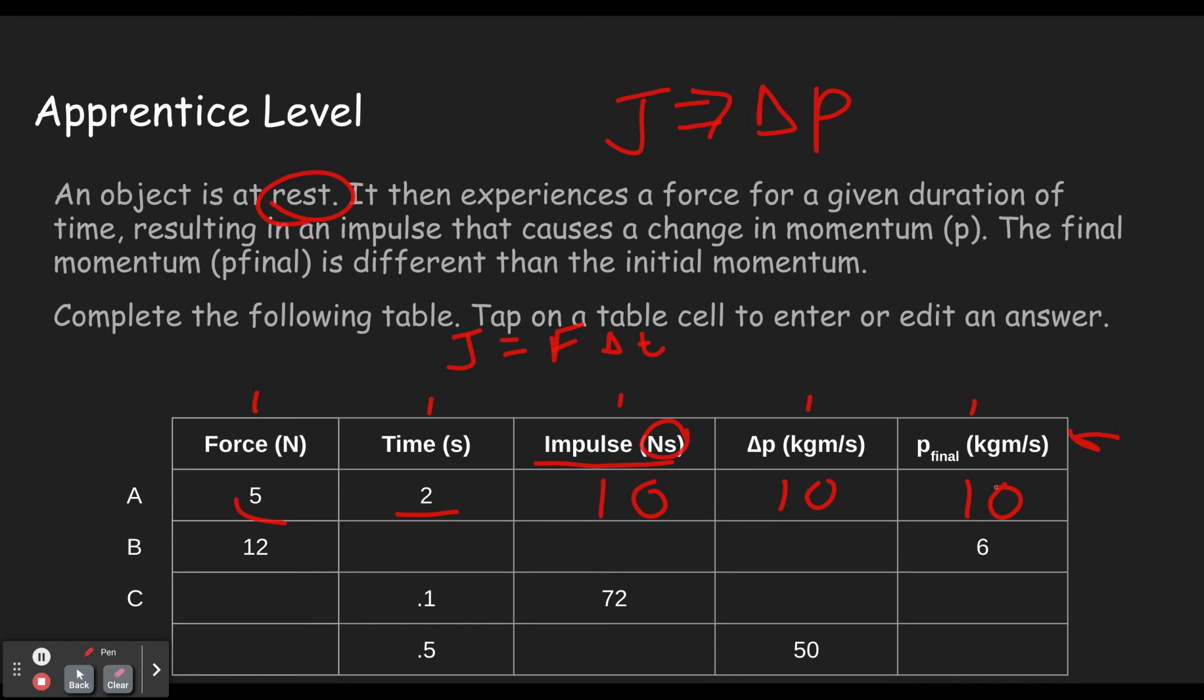So we can work backwards in the second row here, in row B. If it ends up with six and it started with zero, that means it changed by six. To have a change of six means it needed to have an impulse of six. How do we get an impulse of six? Impulse of six with a force of twelve.